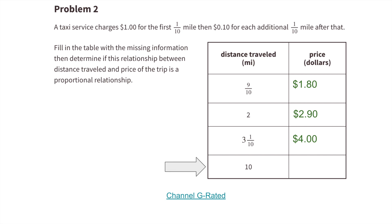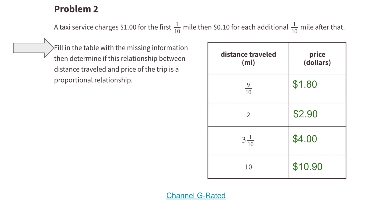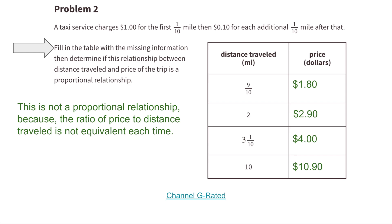When the distance traveled is 10 miles, that's 100-tenths. The first tenth costs $1.00, leaving 99-tenths or 99 dimes, equivalent to $9.90. So $1.00 plus $9.90 equals $10.90. Now we need to determine if the relationship between the distance traveled and the price is proportional. This is not a proportional relationship because the ratio of price to distance traveled is not equivalent each time.